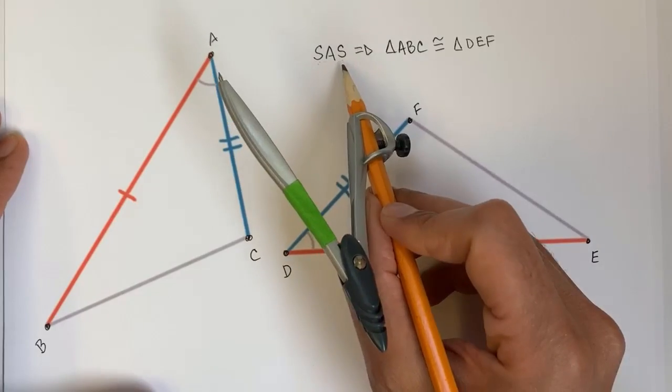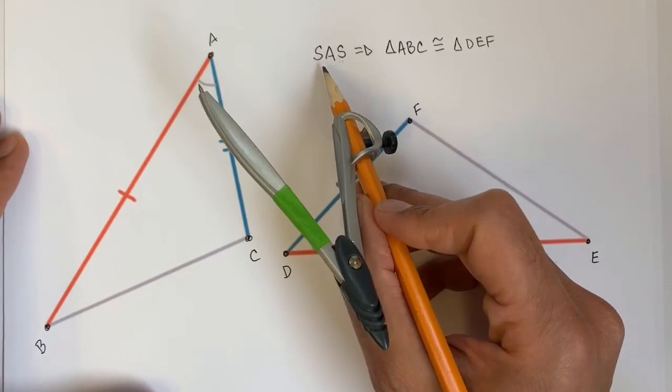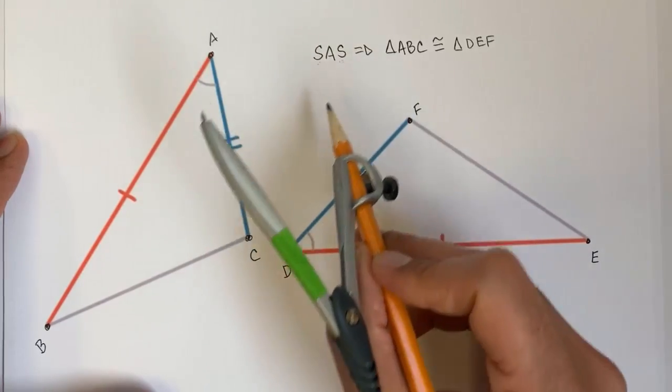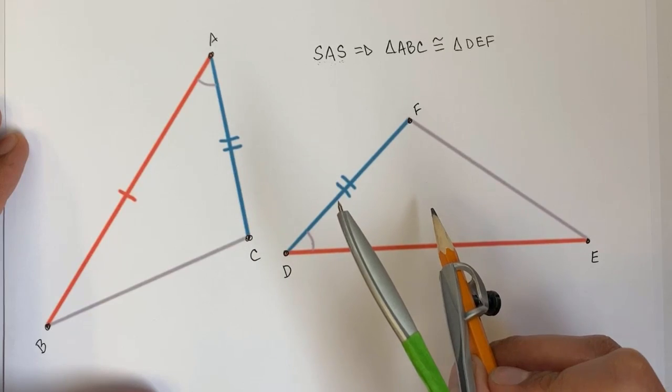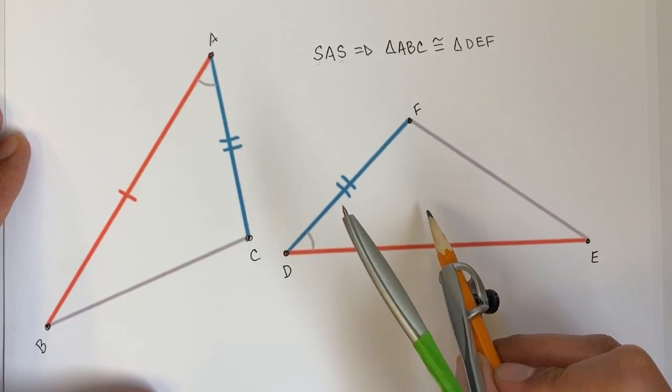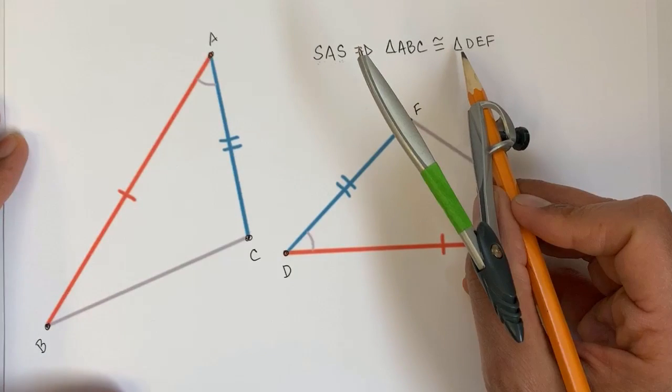So to be able to prove this, in order to make this deduction, we just have to say that there's always a rigid transformation if we have side, angle, side in common that will allow us to map one triangle onto the other. Because if there is a series of rigid transformations that allow us to do it, then by the rigid transformation definition, the two triangles are congruent.